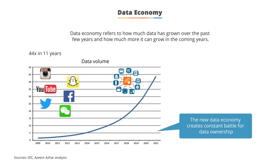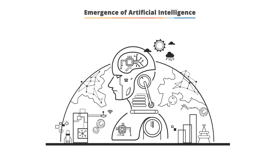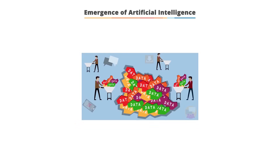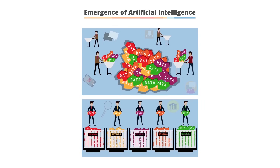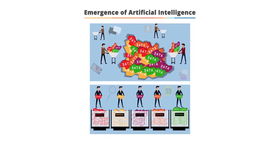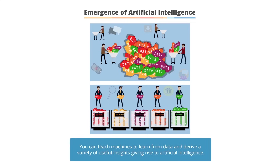With the help of social websites, the explosion of data has given rise to a new economy, and there is a constant battle for ownership of data between companies. As data volume increases, big data helps manage huge amounts of data, and data science helps analyze it, driving a new paradigm where machines can learn from data and derive useful insights, giving rise to artificial intelligence.